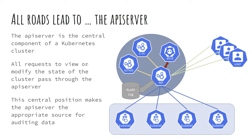There are stages of processing in the audit log. You can record events at a given stage or multiple stages. The stages are: RequestReceived — generated as soon as the audit handler receives the request; ResponseStarted — before the response body is sent, applicable to long-running requests like a watch; ResponseComplete — after the response body is fully sent; and Panic — when something catastrophic happens in Go that could crash the API server. You can also use these stages for filtering events.